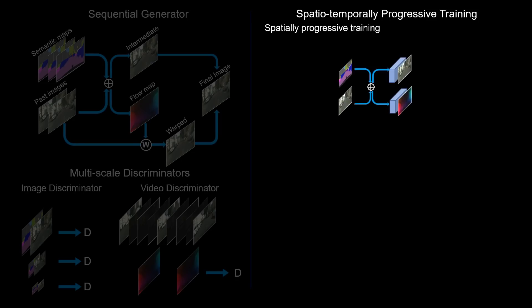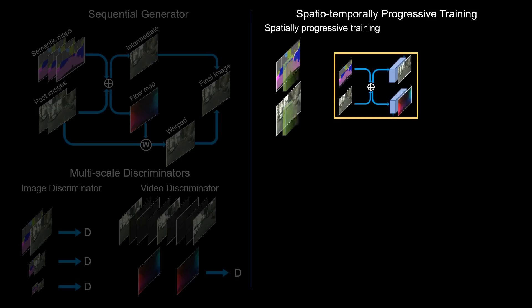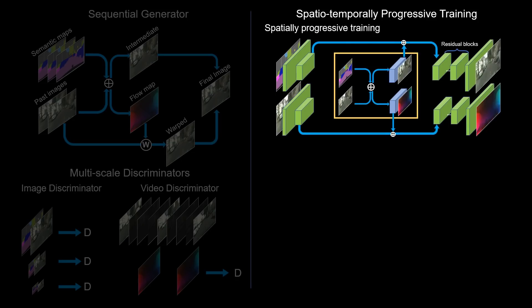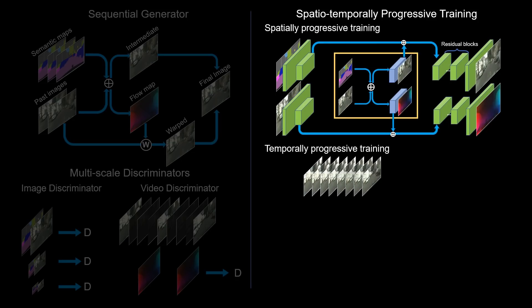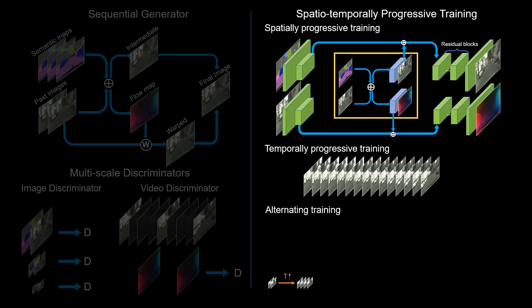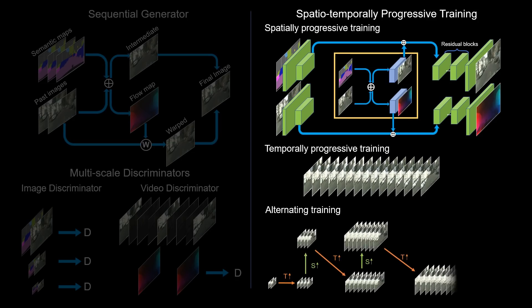Finally, we adopt a spatiotemporally progressive training procedure. We start with low resolution, then train at higher resolution by combining features from the lower resolution. Similarly, we start with only a couple of frames and gradually increase the number of training frames. These two steps alternate, forming a progressive training schedule that enables our network to generate both high-resolution and long-duration videos.